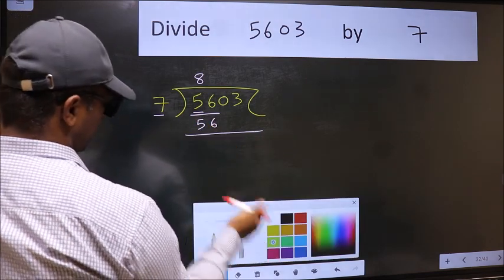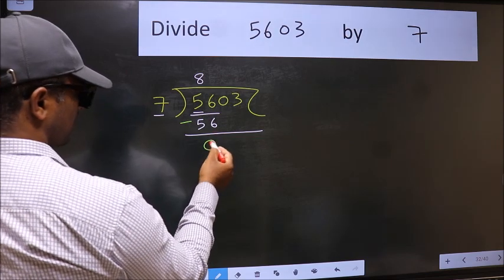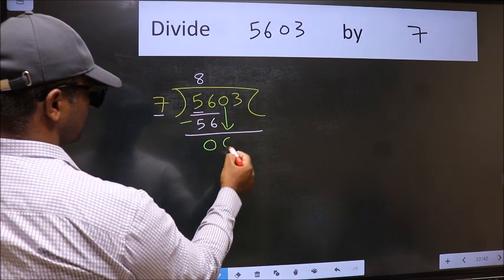Now we should subtract. 56 minus 56, 0. After this, bring down the beside number. So, 0 down.